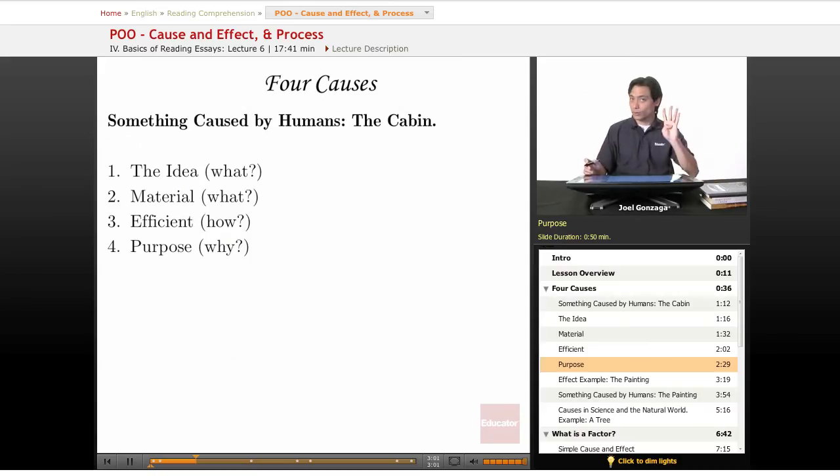So we have four causes. Here's how we think about them. The idea is a what question. The material is also a what question. Efficient is always how did the material become the effect. The purpose is, well, why bother at all?